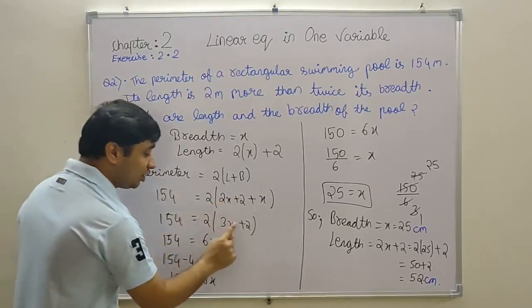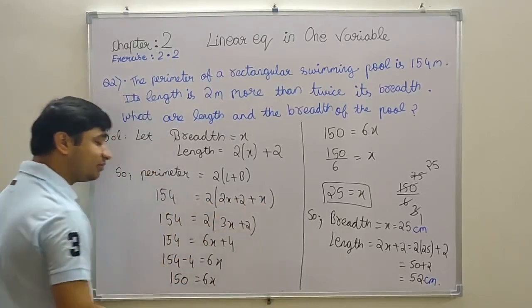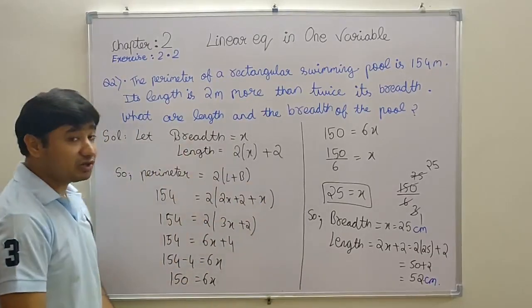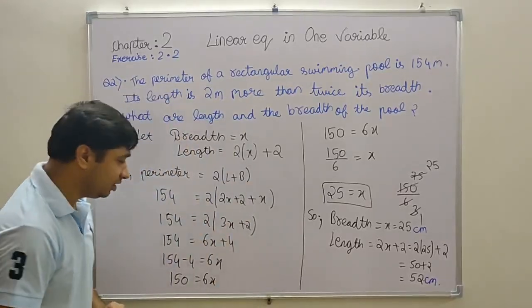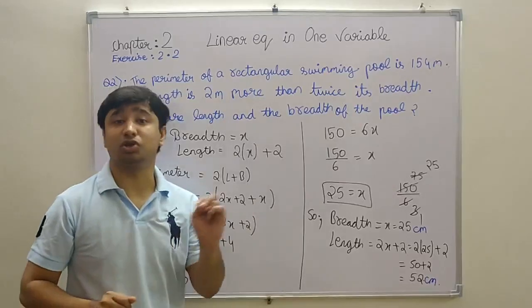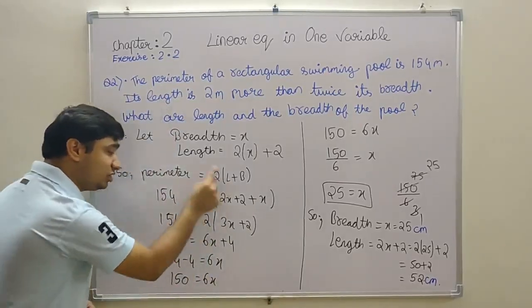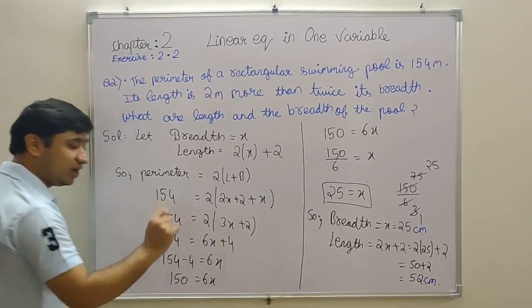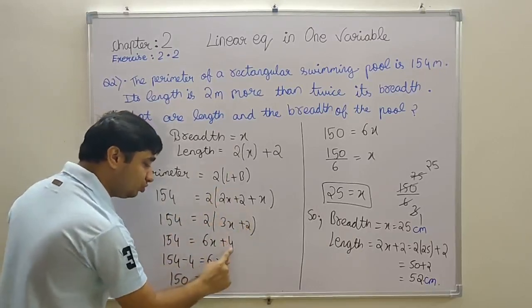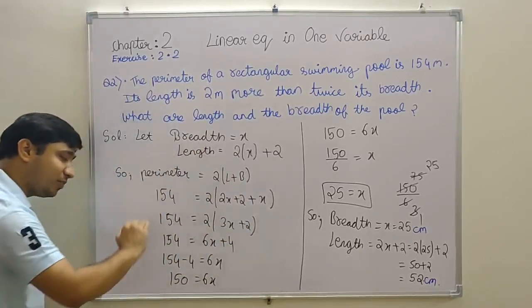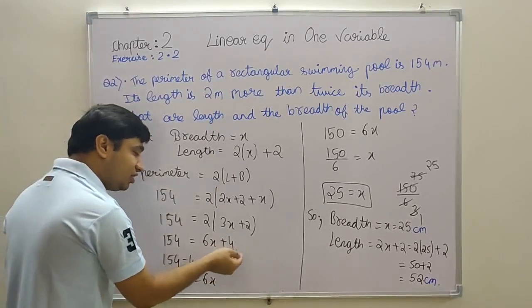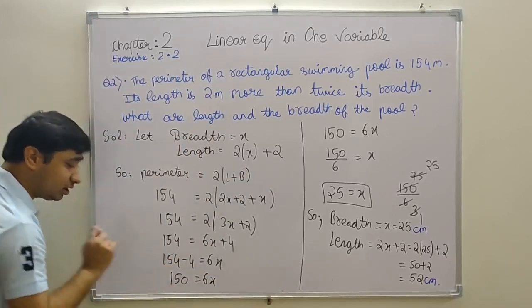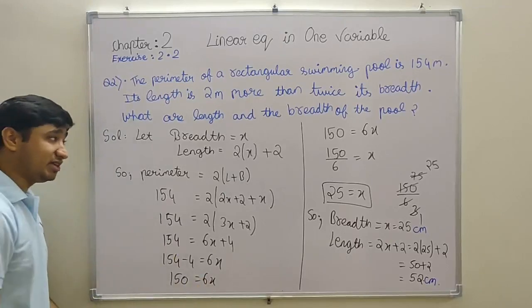So 2x plus 2 plus x equals 3x plus 2. When there's a bracket, it means 2 multiplies here and here also, because in math there is no discrimination. Discrimination means if I teach one well and don't teach the other well. So 2 multiplies with both terms: 2 times 3x gives 6x, 2 times 2 is 4. Now I'll bring this 4 to the other side. When something is positive, it becomes negative on the other side. 154 minus 4 comes to 150 equals 6x. When two things are in multiplication, it goes to the other side in division. So 150 divided by 6 equals x.